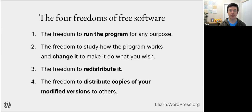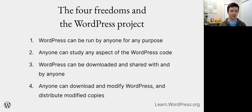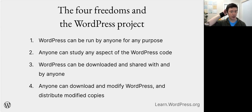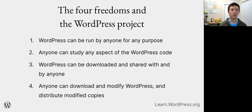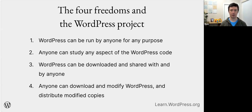So what does this mean for WordPress specifically? The WordPress project also has these four freedoms connected to its software. The WordPress software is licensed under the General Public License, often shortened to GPL. Specifically, the GPL states: WordPress can be run by anyone for any purpose; anyone can study any aspect of the WordPress code; WordPress can be downloaded and shared by anyone; and anyone can download, modify, and distribute modified copies.